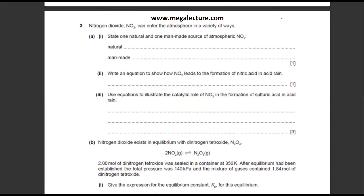State one natural and one man-made source of NO2. The natural source is lightning strikes — the air heats up and since air contains nitrogen and oxygen, they react to produce NO2. This has nothing to do with Kp.